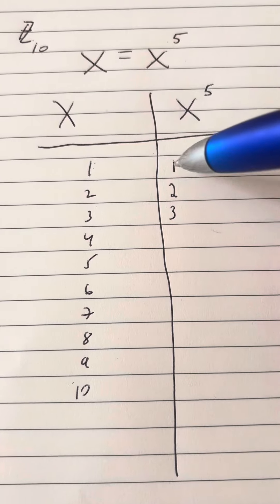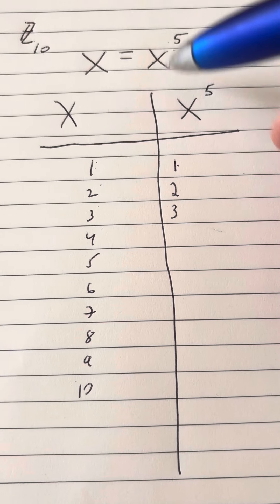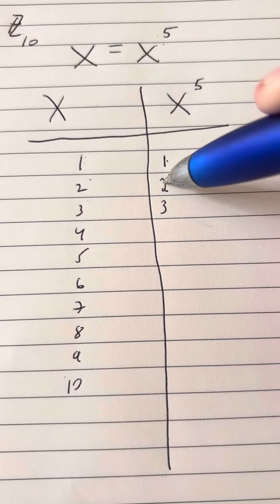Okay, so we want to find when x is equal to x to the 5th. So we're going to list the numbers from 1 to 10, and we're going to take it to the 5th power.